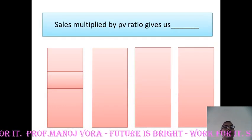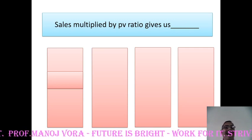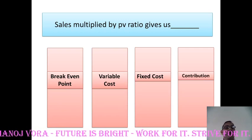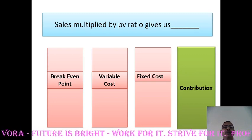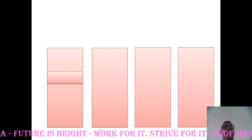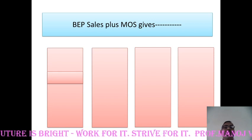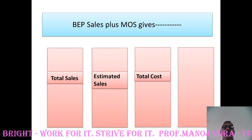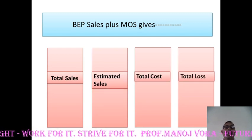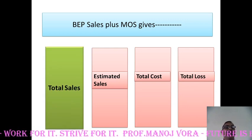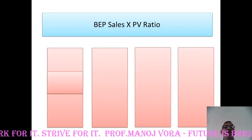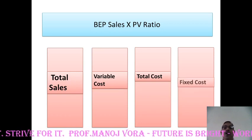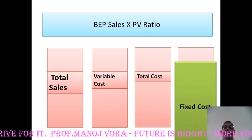Sales multiplied by PV ratio gives us — breakeven point, variable cost, fixed cost, or contribution. Your right answer is contribution. Sales multiplied by PV ratio gives us contribution. Breakeven point sales plus margin of safety gives us total sales, estimated sales, total cost, or total loss. Your final answer has to be total sales. Breakeven point sales multiplied by PV ratio gives us total sales, variable cost, total cost, or fixed cost. Your right answer has to be fixed cost.